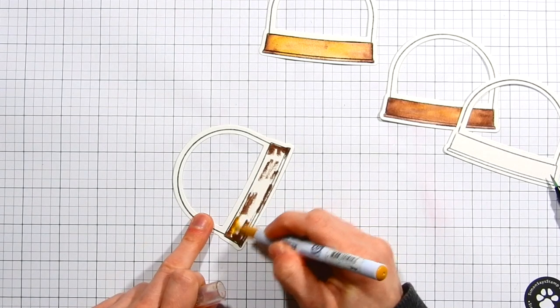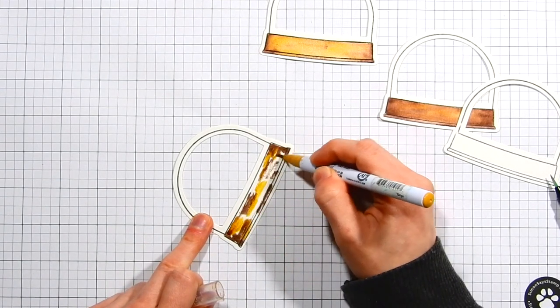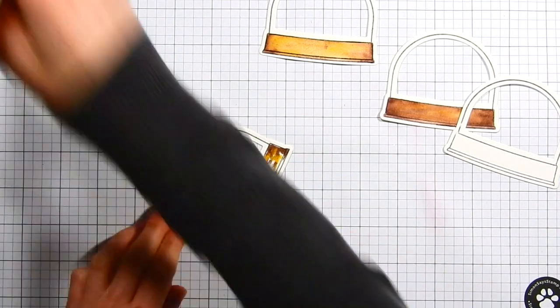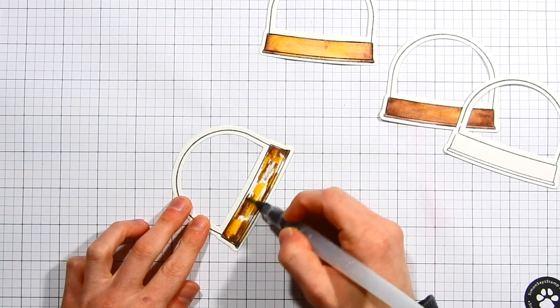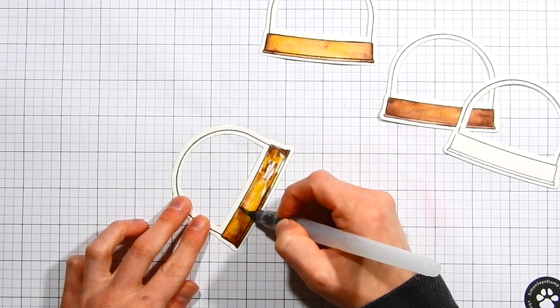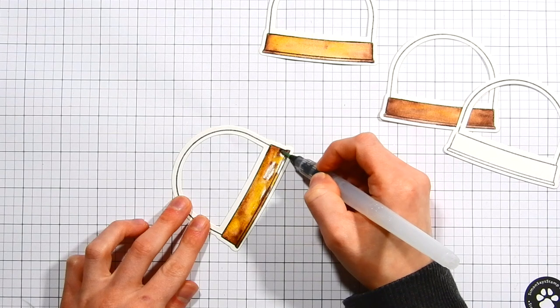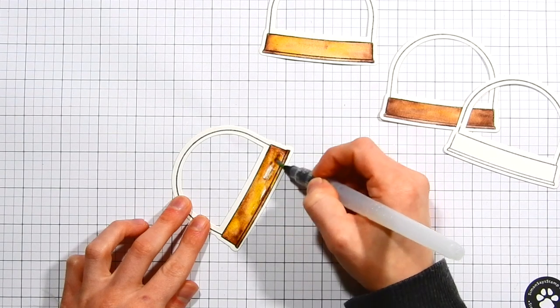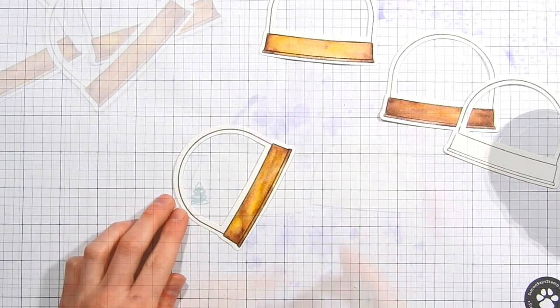To add some shading to my snow globes I'm using one of the dark brown Zig Clean Color markers and also a bit of beige and then mixing them together onto my snow globe and then I'll go ahead and blend it out with my water brush. I think when you mix the colors together like this you get a little bit more variation to the coloring and it helps give your images a bit more interest.